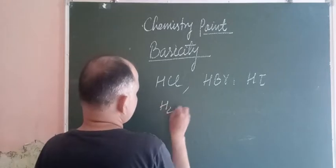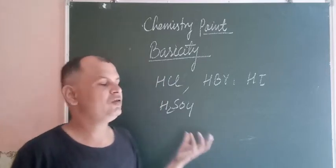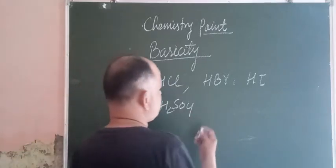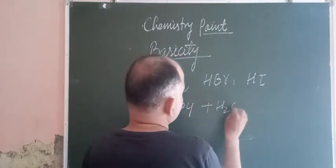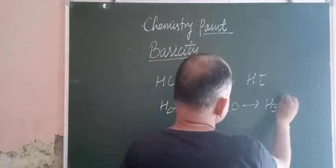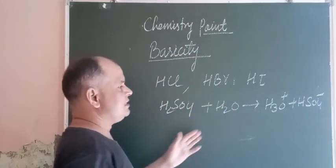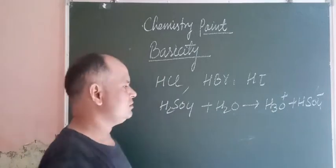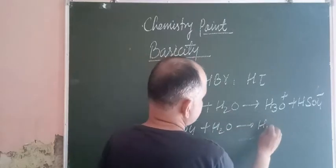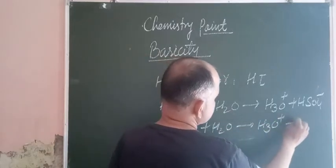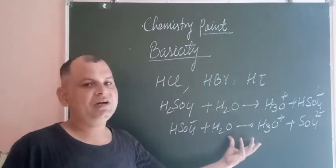H2SO4 is dibasic because it contains two H+ ions which combine with water and form two hydrogen ions. When H2SO4 combines with H2O, we get H3O+ plus HSO4-. This HSO4- again reacts with water.